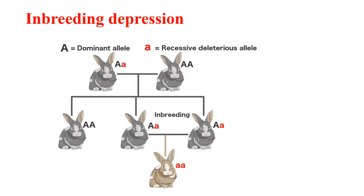Inbreeding depression is one of the drawbacks of inbreeding. Continued inbreeding reduces fertility and productivity. It also exposes harmful recessive genes that are eliminated by selection. As shown in this picture, the capital A is the dominant allele and small a is the recessive allele. Continuous inbreeding has resulted in the development of a progeny containing both recessive alleles.